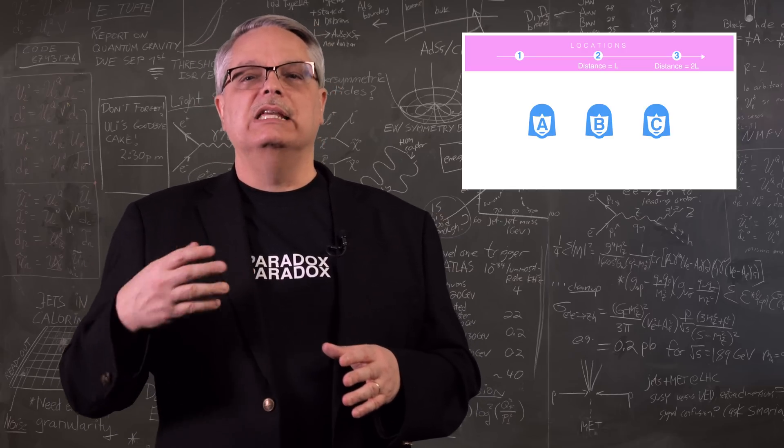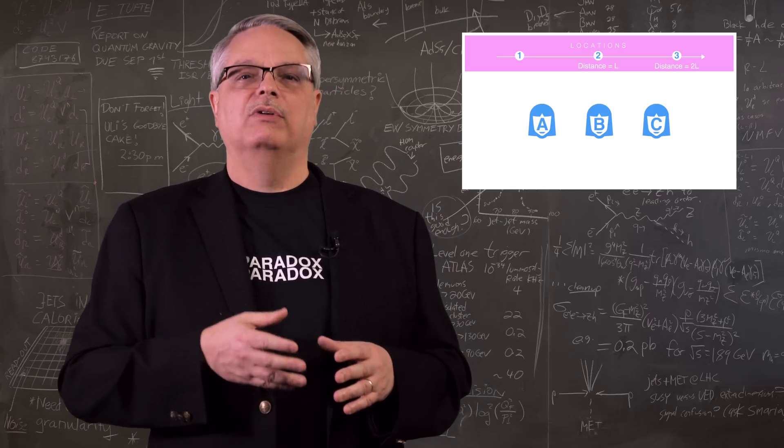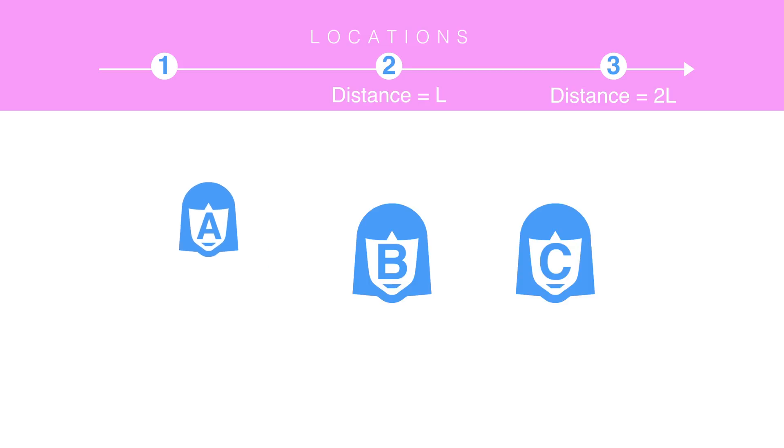When we start out, we put ourselves in the point of view of observer A. Observer A just sits unmoving at location one. Observer B is at location one, moving to the right at velocity v. Observer C is way over at location three, moving to the left at velocity minus v.